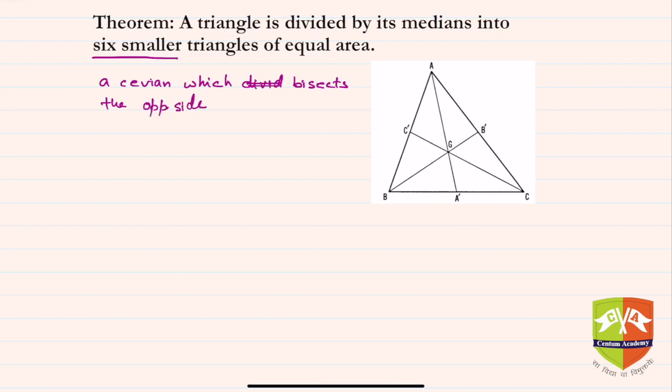In this figure, AA' is a median; similarly BB' and CC' are medians. They bisect the sides BC, CA, and AB respectively. We have to prove that all three medians divide the triangle into six equal parts.